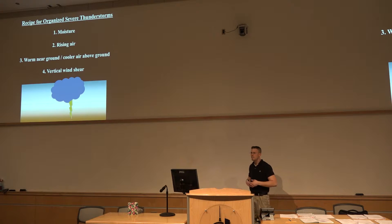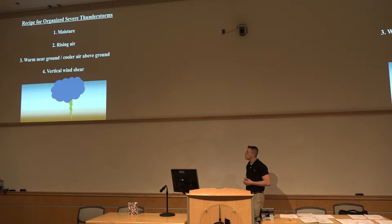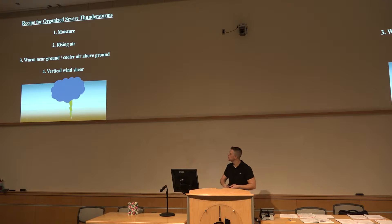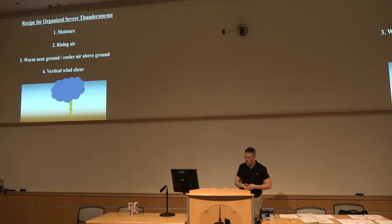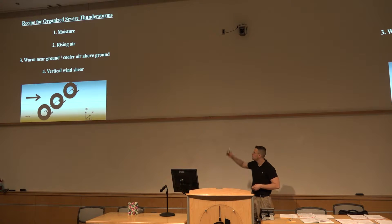That decrease in temperatures with height relates to instability, and if the magnitude of that decrease meets a certain condition, we can get thunderstorm development. So decreasing potential temperature with height is the third ingredient. To summarize: we need moisture in the air, lift in the atmosphere, instability in the background environment, and for organized severe thunderstorms, a fourth condition — vertical wind shear, a change in wind speed or wind direction with height.